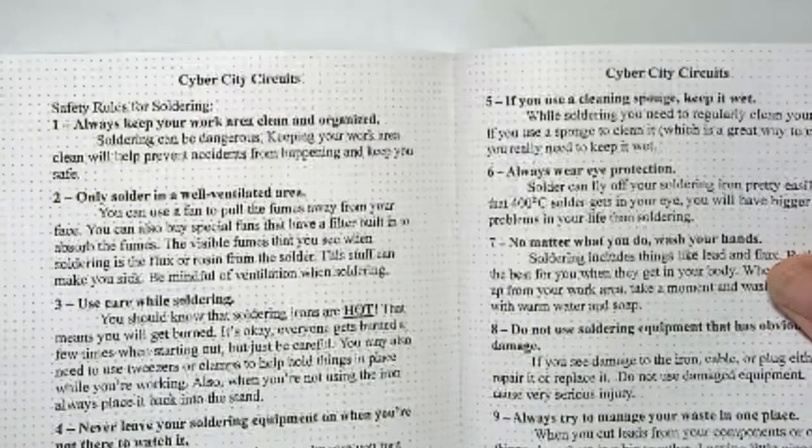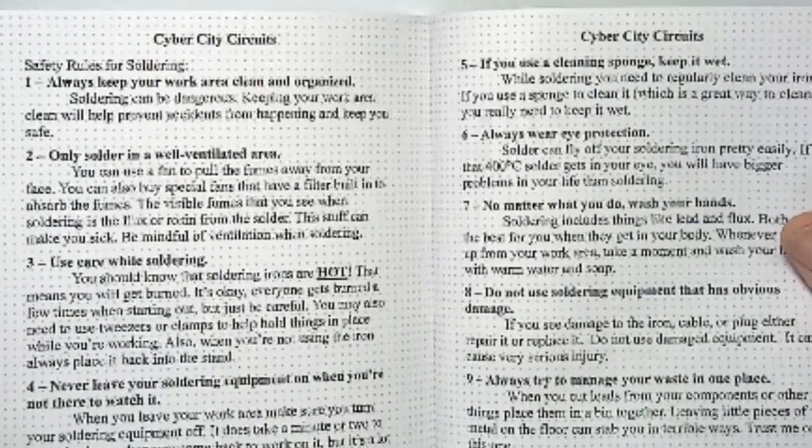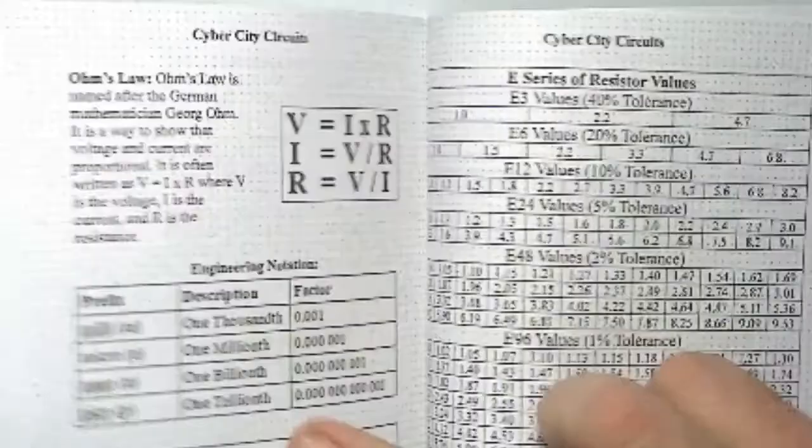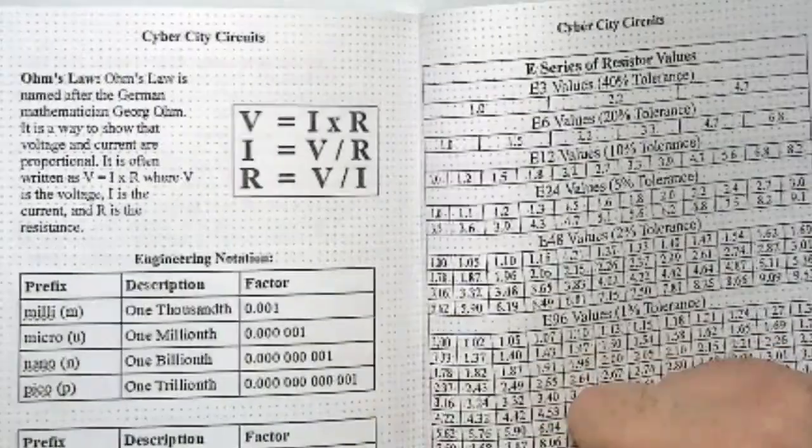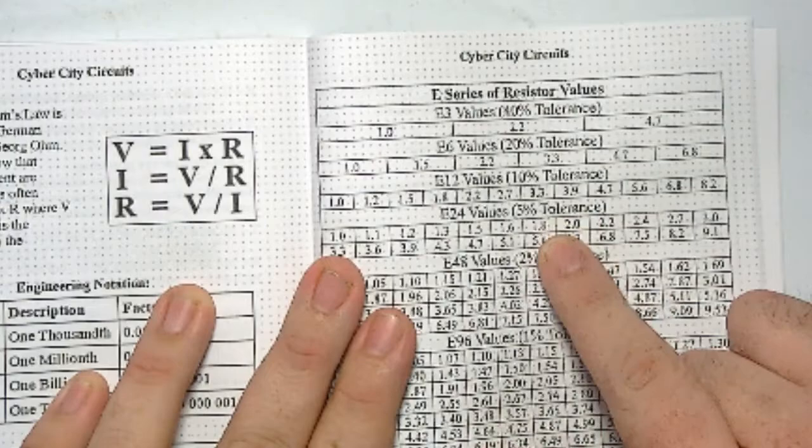And then towards the back, I've included some other stuff. Here's your soldering safety rules, Ohm's Law engineering notation reference, your E-series of resistors. There's your E3, your E6, your E12.